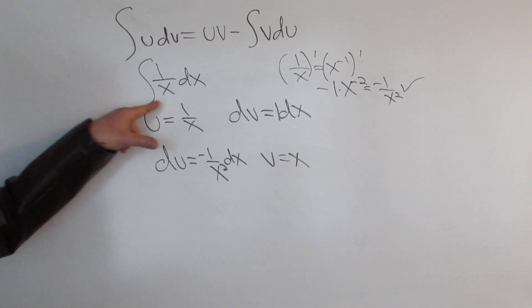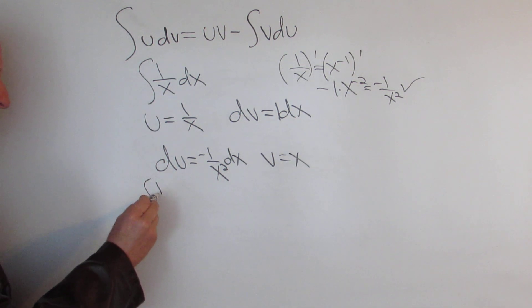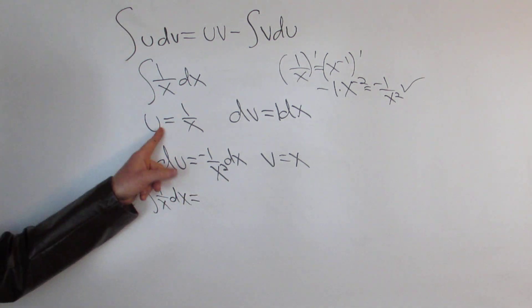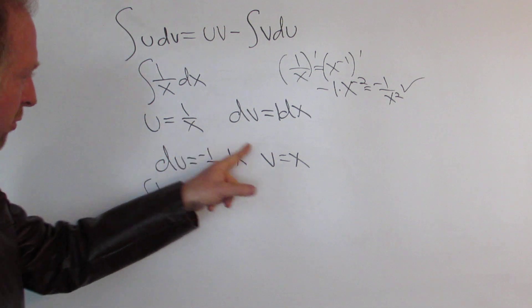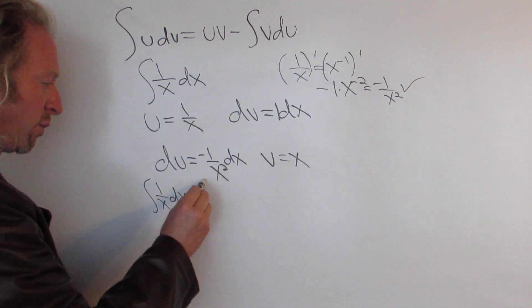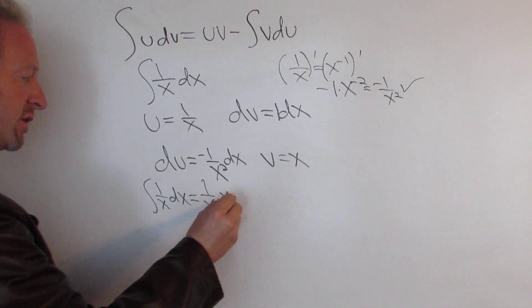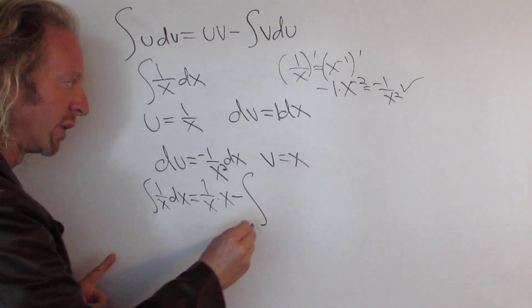Alright so now let's use the formula. So we have 1 over x dx. That's equal to uv, right? So uv - it's the formula. That's 1 over x times x, that's just 1. So uv minus the integral of vdu.